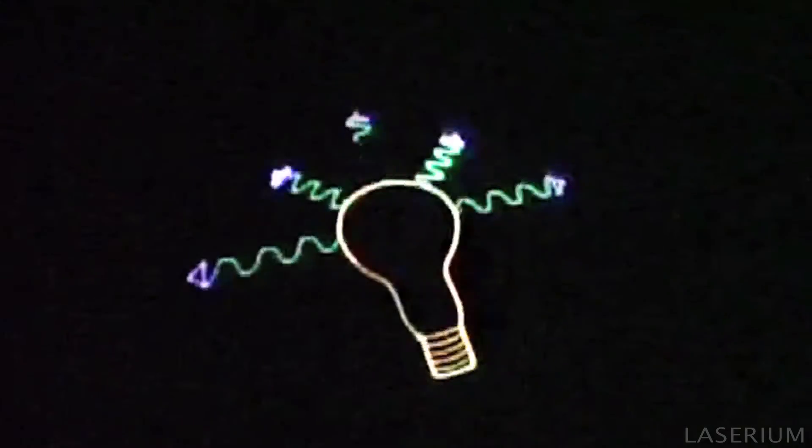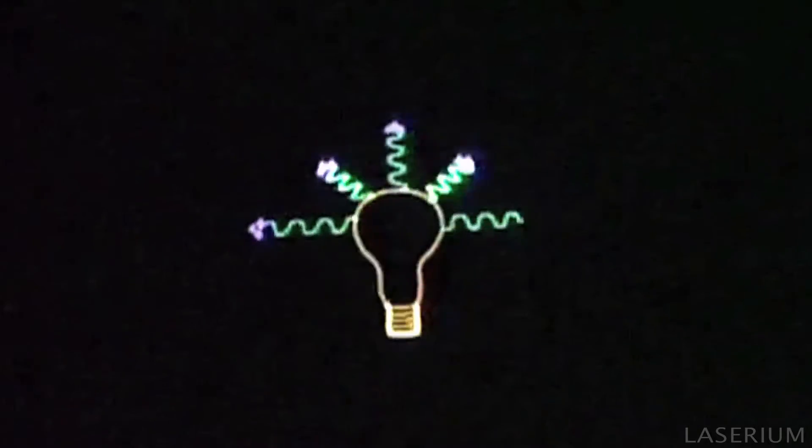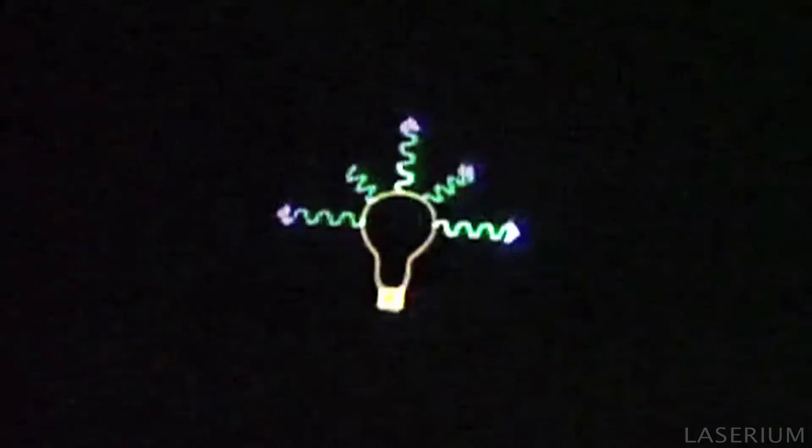Why is laser light different from other kinds of light? Ordinary light from the sun, or from a light bulb, spreads out in all directions from its source. This kind of light is known as incoherent light.